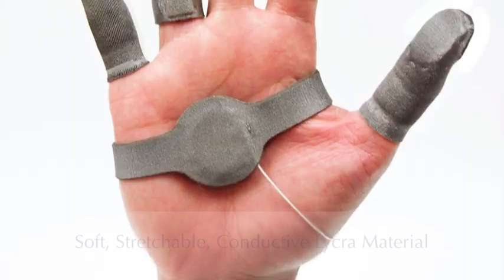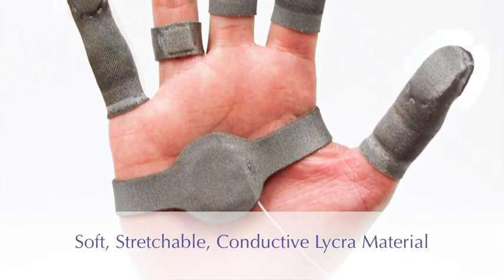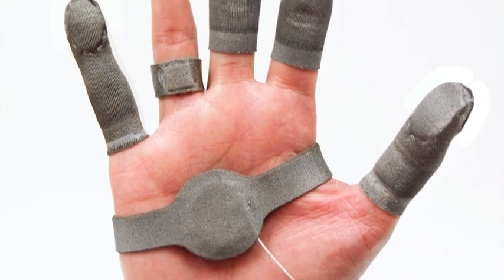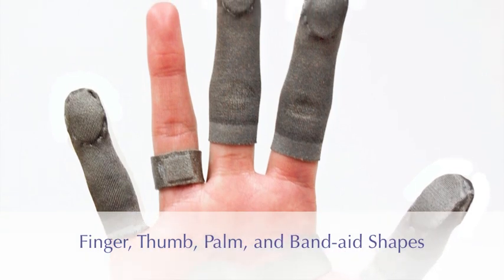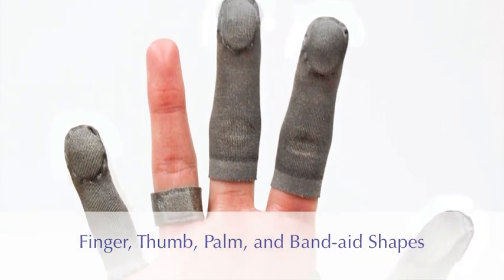As you may be aware, the FingerTPS system is really the only practical solution for instrumenting the hand. There's a number of reasons for that. We use lycra spandex material that conforms to the fingers. We offer that in three different sizes for the fingers and also have a palm and a band-aid type sensor that can be worn.